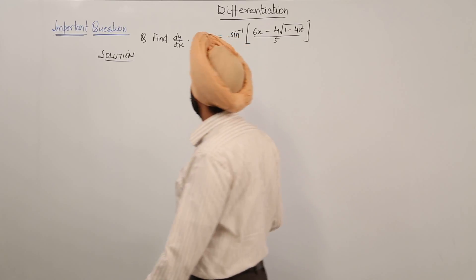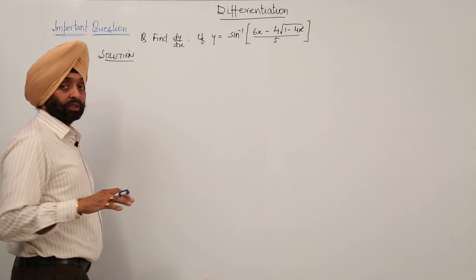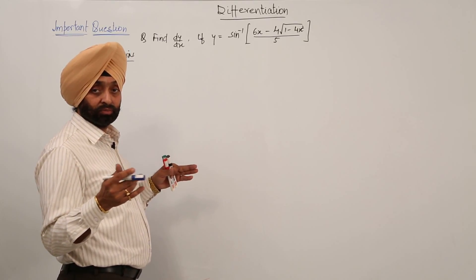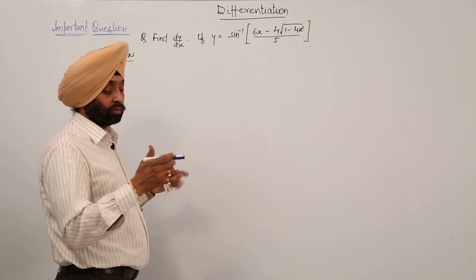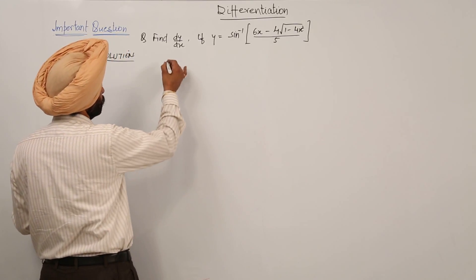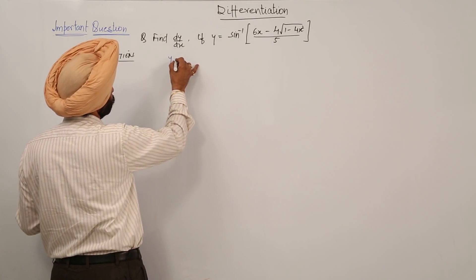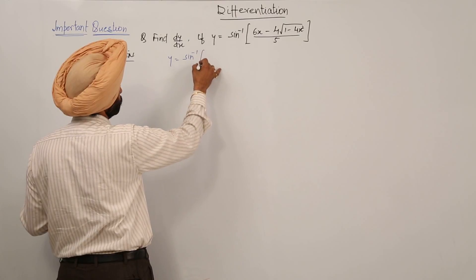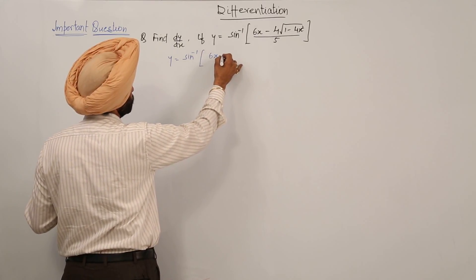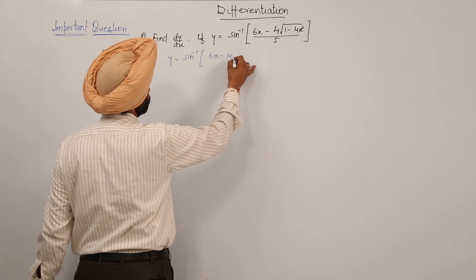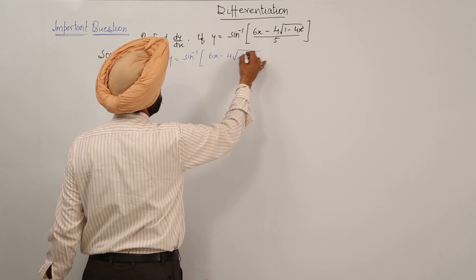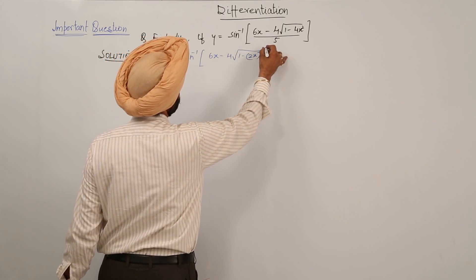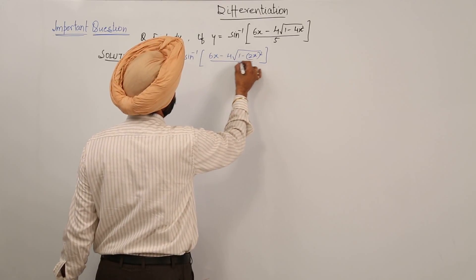Now let's convert the question. We have done these types of questions in inverse trigonometric functions for differentiation also. We can write this as y is equal to sin inverse of (6x minus 4 times the square root of 1 minus (2x)² ) upon 5.